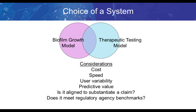In terms of the choice of system, there are two steps in the decision-making process: what is the biofilm growth model to use, and what is the therapeutic testing model? In some cases, they may be the same; in others, not necessarily. Considerations include cost, speed, user variability, reproducibility, and predictive value. But beyond the scientific in vitro and in vivo aspects, we must also consider whether our testing models will substantiate a claim, and whether they will meet regulatory agency benchmarks. For example, we can design testing strategies which work very well, but if the regulatory agency says they're not in alignment with expectations, they might have limited value.